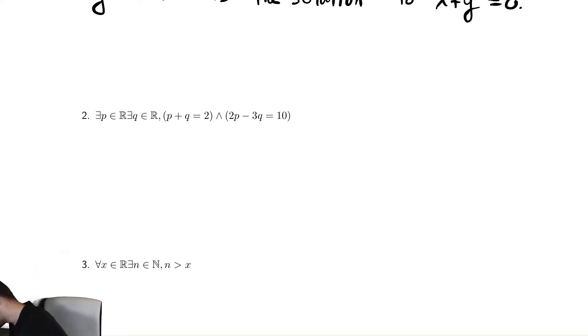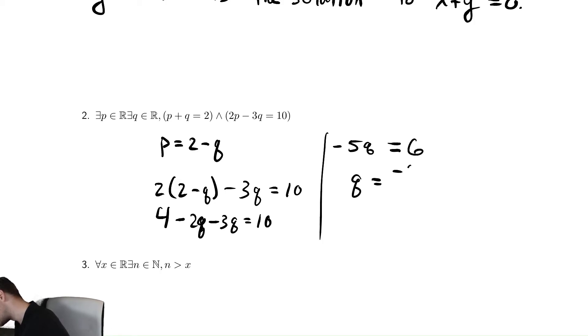This can be proven true if you wanted by solving the first equation for p, and then plugging that into the second equation. So then you have two times two minus q minus three q equals ten. Keep doing more math, and we get four minus two q minus three q equals ten. Now we need to solve this. We subtract four from both sides and combine some like terms, and we get minus five q is equal to six. Q is therefore equal to negative six fifths.